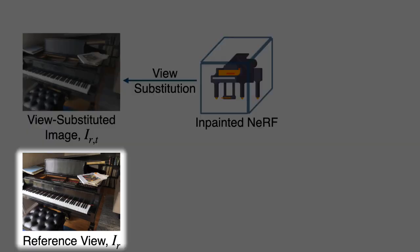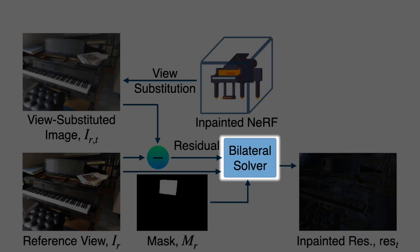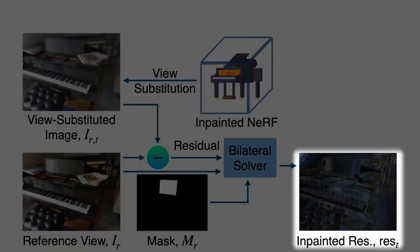For each target, using the reference view and the current stage of the inpainted NeRF, we use our view-substitution method to get the view-substituted image. We then calculate the difference between the reference view and the view-substituted image to get the residual. The residual is then inpainted using a fast bilateral solver to get the inpainted residual.